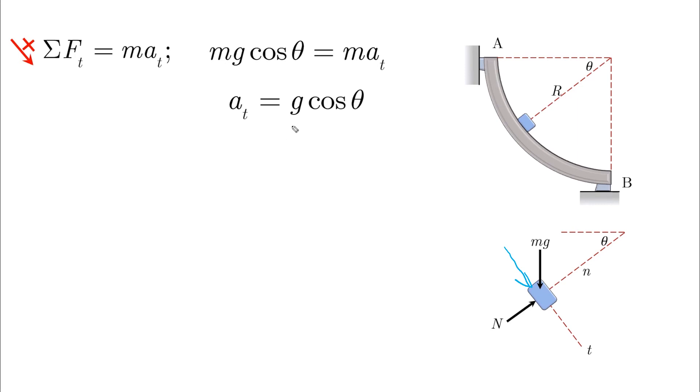Then you cannot use constant acceleration equations here because at is function of theta. So if at is function of theta, it means that at is also function of s, where we can use v dv equals a ds. And by integrating both sides and considering ds to be equal to r d theta, we can solve for any variable that the question is asking for.